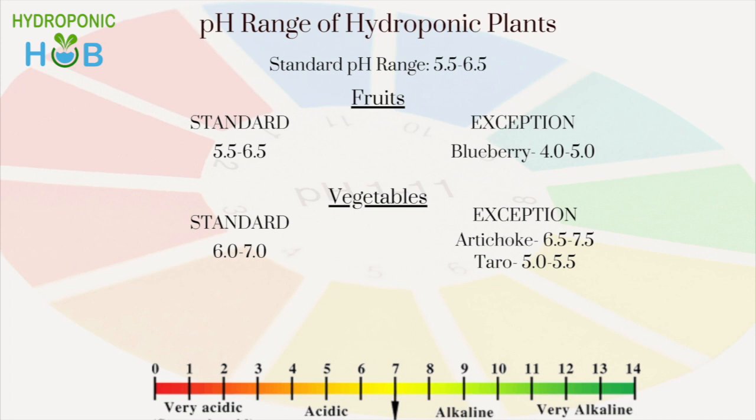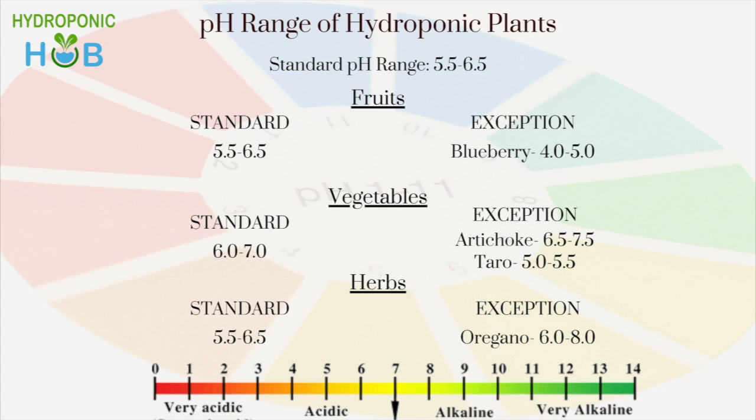The pH ranges of herbs are standard but very narrow and precise, with a range gap of only 0.5 pH, except in oregano which has a range gap of 2 pH. This makes it a little difficult to maintain the pH of herbs due to the smaller range.